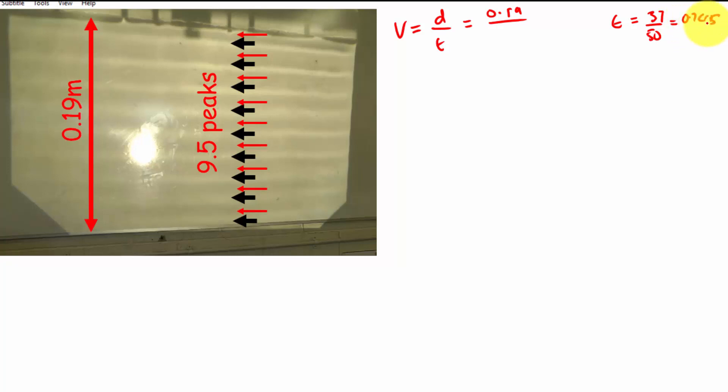0.74 seconds, so basically we're going to do 0.19 divided by 0.74, which gives you 0.26 when you round up. 0.26 meters per second, okay.